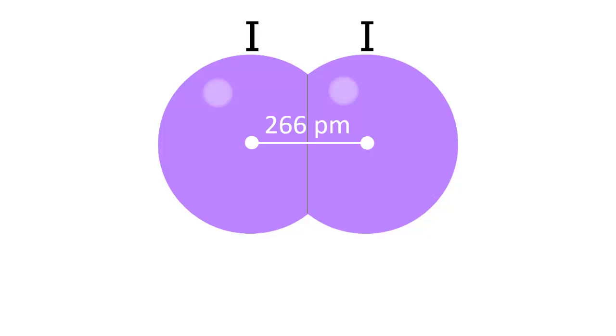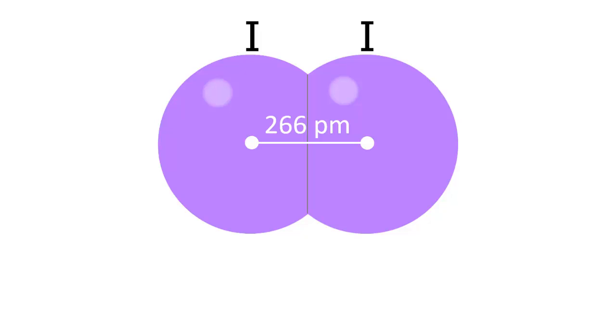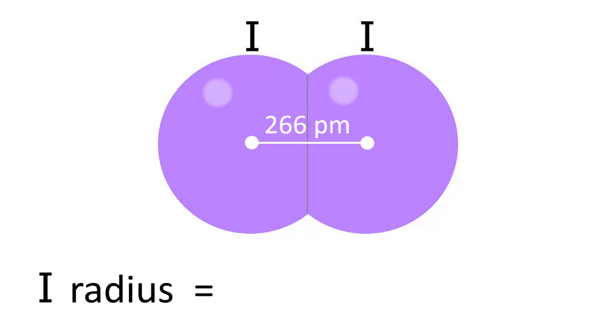Chemists can also measure the atomic radii of two atoms that are covalently bonded to one another. For instance, if we studied a diatomic iodine molecule and measured the distance between the nuclei of the two covalently bonded iodine atoms, we get a value of 266 picometers.